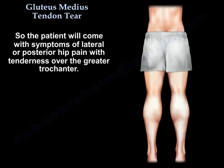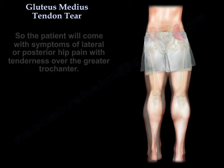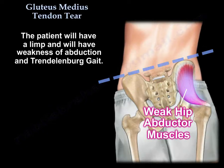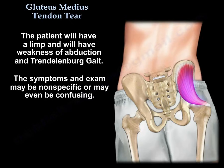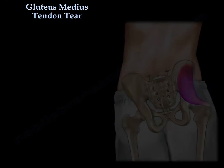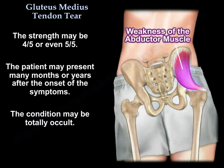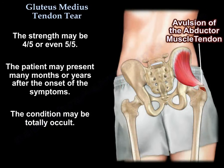The patient will present with symptoms of lateral or posterior hip pain with tenderness over the greater trochanter. The patient will have a limp, weakness of abduction, and Trendelenburg gait. The symptoms and exam may be non-specific or even confusing. Strength may be 4 over 5 or even 5 over 5, and the patient may present many months or years after onset of symptoms. The condition may be totally occult.